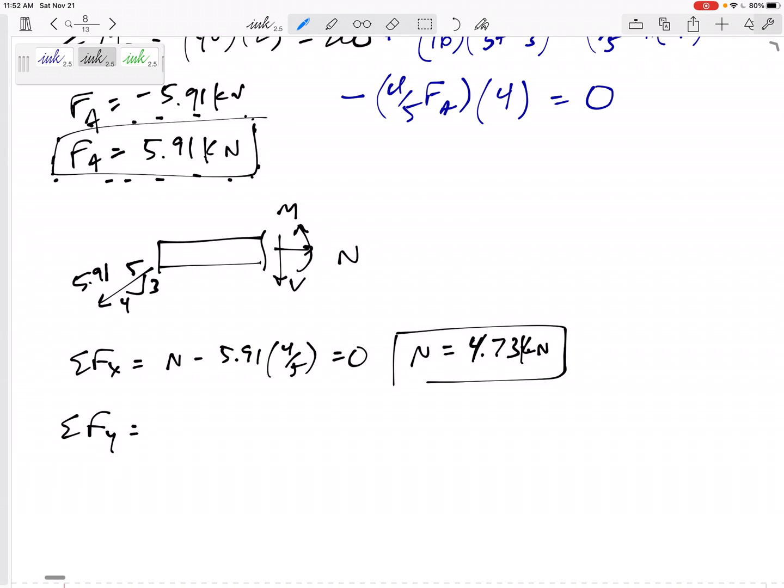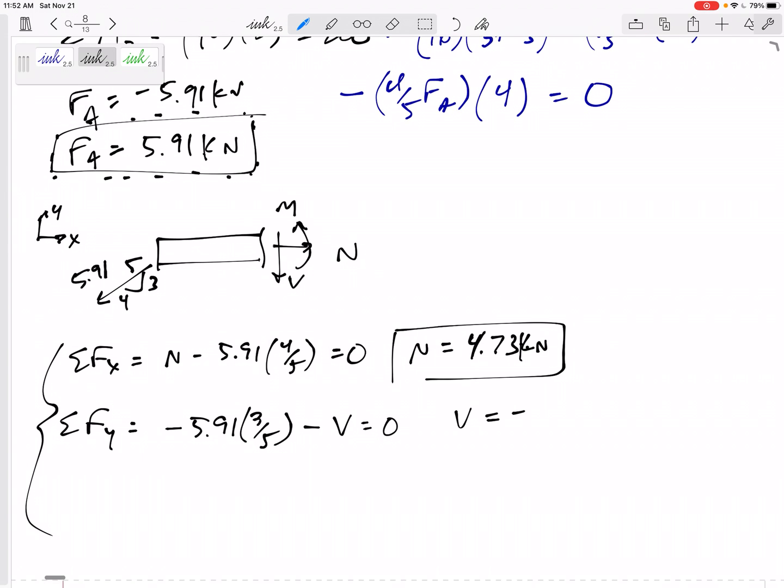Summing the forces in the y direction. 5.91, the three-fifths component is down. Minus V. Y minus V. I thought it was in the positive sign convention. I drew it in the positive sign convention. These equations are according to our axes. So define your axes some direction and stay consistent. I'm defining my axes positive. So positive up. Set that equal to zero. And I would get V is negative 3.55 kilonewtons. What do you do if it comes out negative? Box it in and leave it negative.